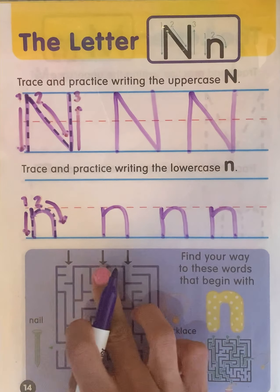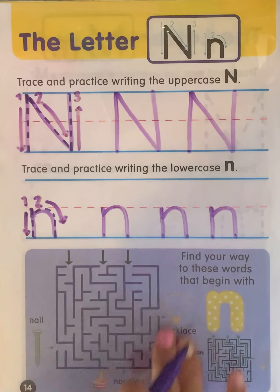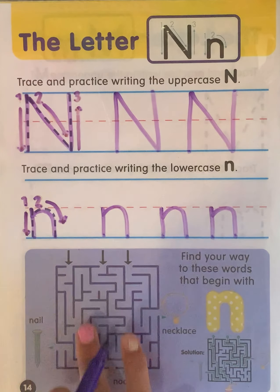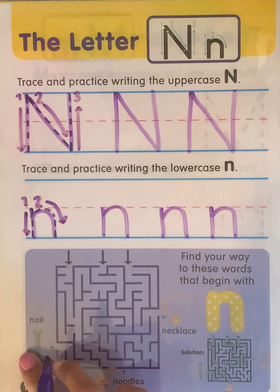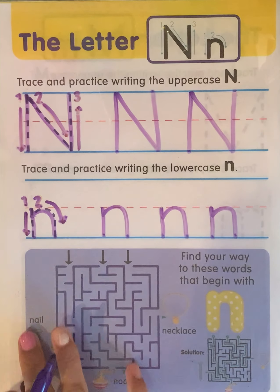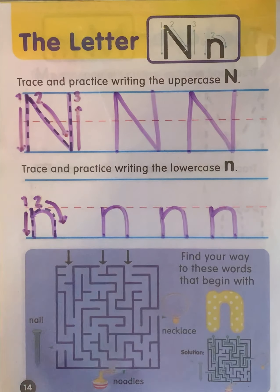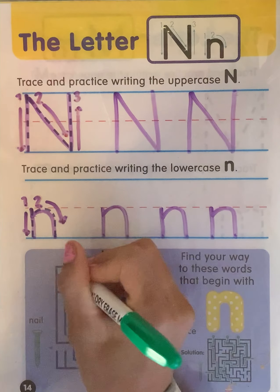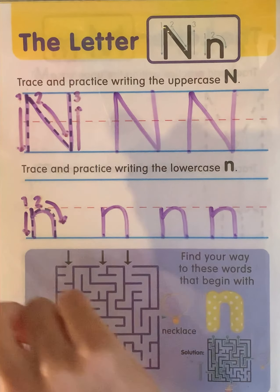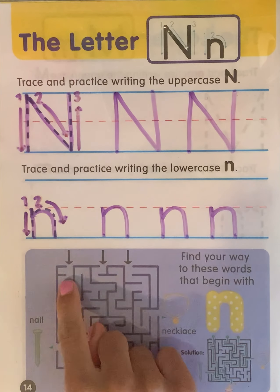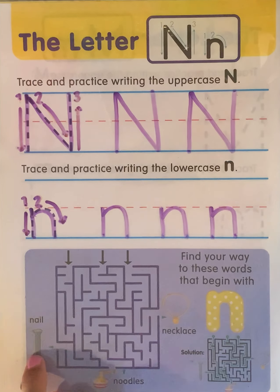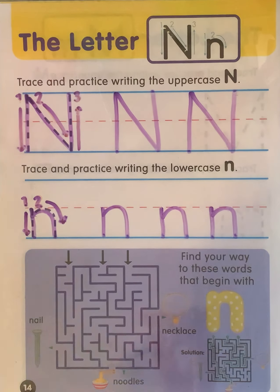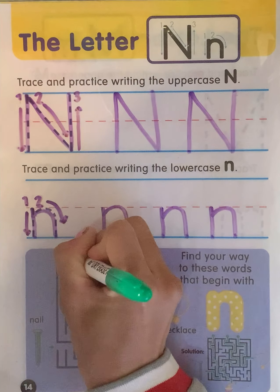Now we have three different paths here in this maze that will help us get to our pictures and our words that begin with the letter N. So let's start with our first one — our first one is nail. I'm going to use the color green to find our nail. I want you to tell me, or maybe point, which path to take to try to get to the nail. So let's start — our first one is going to be in color green.